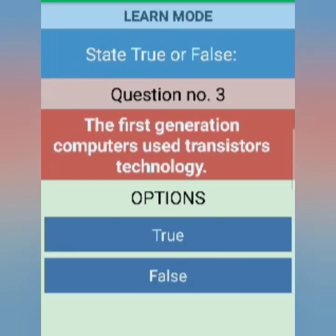The next question: the first generation computers used transistor technology. In the first generation, transistors were not developed — in first generation, only vacuum tubes were used. So this is wrong and FALSE.